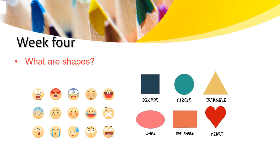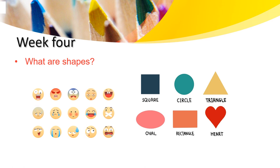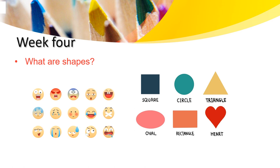Week 4 - What are shapes? So guys, I want you to look at the image on the right and see what are these. Yes, this is a square, circle, triangle, oval, rectangle and a heart. Yes, it's true.